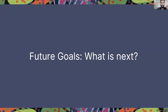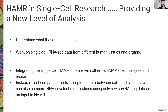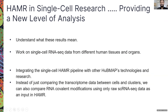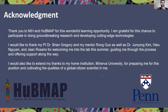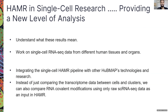Our future goals include understanding what these results mean — why modifications appear in one cluster and not another. We are also working on single-cell RNA-seq data from human tissues and organs. Most importantly, we want to integrate the single-cell HAMR pipeline with other HuBMAP technologies and research, so that instead of just comparing transcriptome data between cells and clusters, we can also compare RNA covalent modifications using single-cell RNA-seq data as input in HAMR.